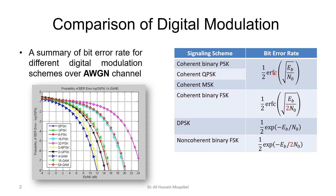The figure on the right shows performance comparisons we have seen before. Coherent binary PSK, coherent QPSK, and coherent MSK all have similar performance. For coherent binary FSK we need double the energy to achieve the same performance. For DPSK (differential phase shift keying) there is an exponential relation, and non-coherent binary FSK performs even worse. In terms of probability of error, PSK and QPSK are equivalent, but others differ, so always consider both error performance and power spectral efficiency.